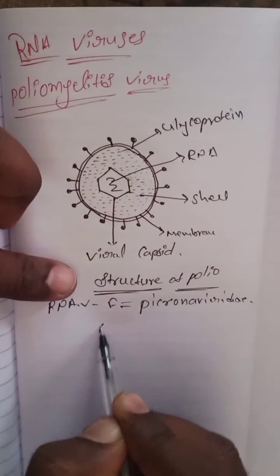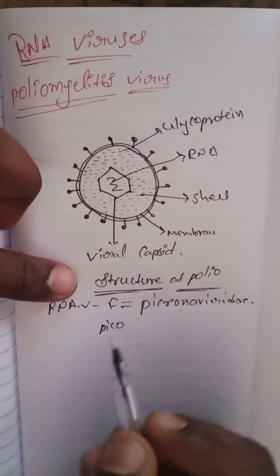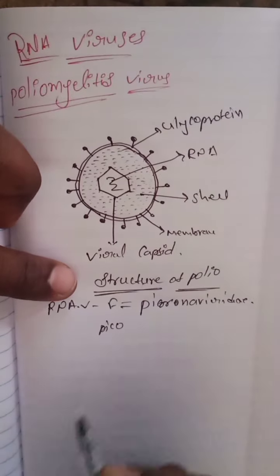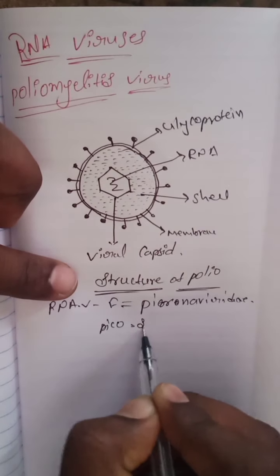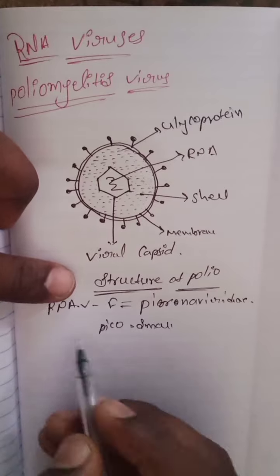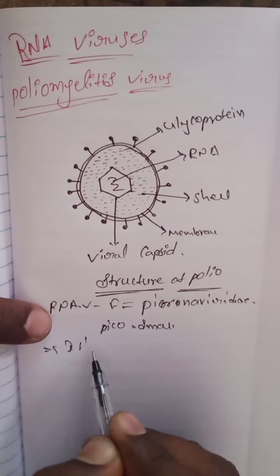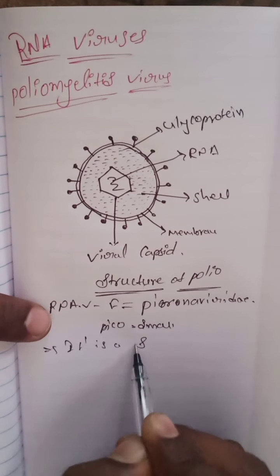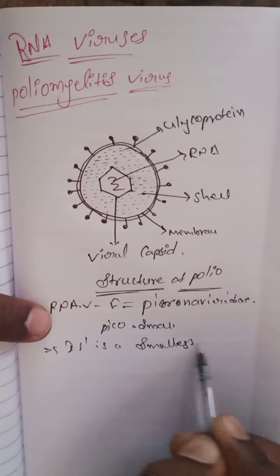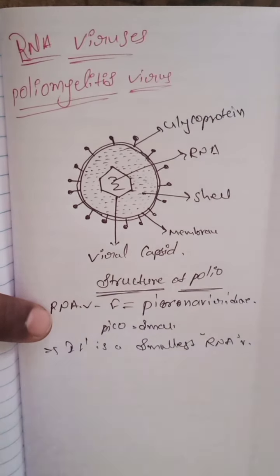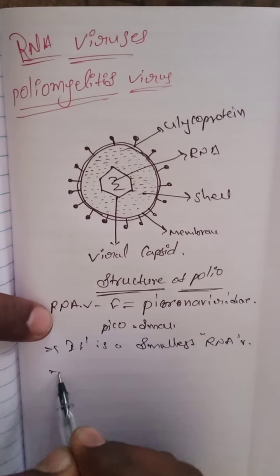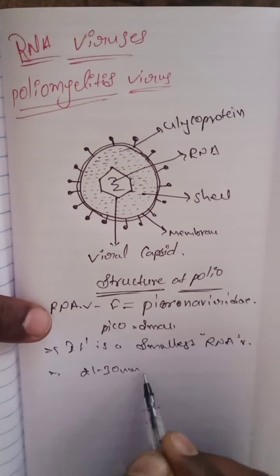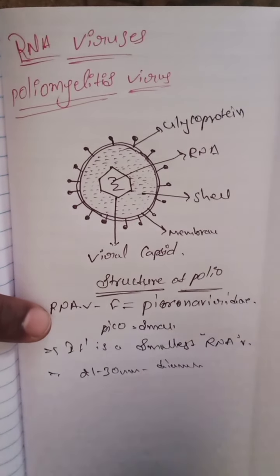Picornaviridae — what does 'pico' mean? Pico means small. The polio virus is the smallest RNA virus, with a measurement of 21 to 30 nanometers in diameter.